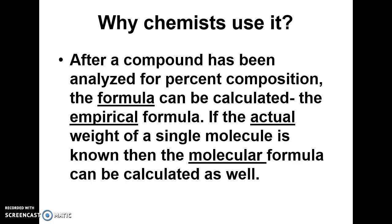Chemists use empirical formulas in experiments. They can analyze the percent composition of a compound to know what percent is each element, and from that they can find the empirical formula. Then, with some additional information and measurements, they can find the molecular formula as well.